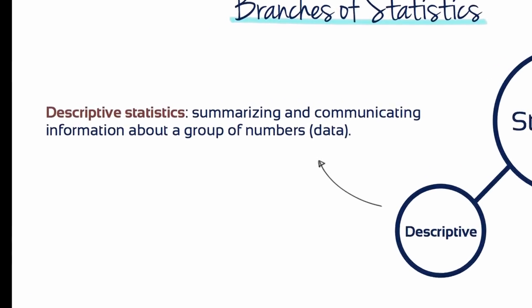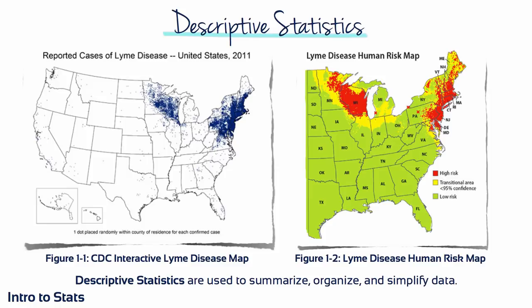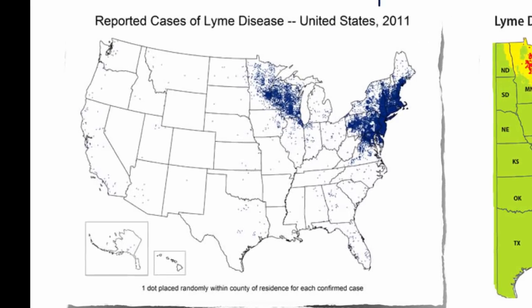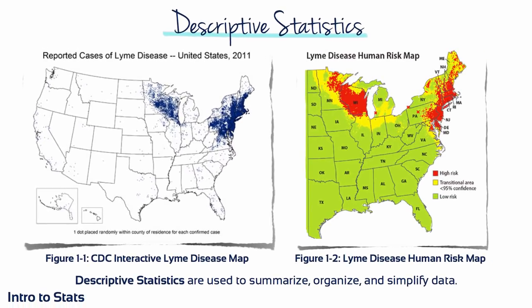Let's take a closer look at descriptive statistics. Both figures shown are examples of descriptive statistics. Each blue dot in Figure 1 represents one of tens of thousands of confirmed cases of Lyme disease in 2011. Rather than examining CDC records for every county of every state in the US, these statistical maps summarise, organise and simplify the data into a form that is more easily communicated and understood.